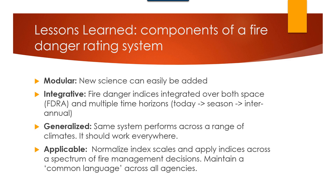The last part is the applicable piece — we've learned a lot about what the numbers mean. We know that an individual energy release component (ERC) value, a raw value, is only relevant for the place it's calculated. An ERC of 52 doesn't mean the same thing in the southeastern United States that it means in the southwestern United States. So we have to normalize those scales in some meaningful way, usually by converting to percentiles, to really be able to either compare between places or to communicate how fire danger is changing over time within a local unit.